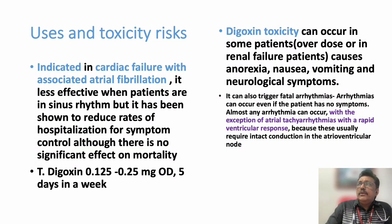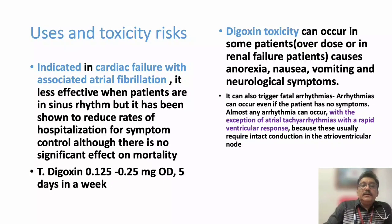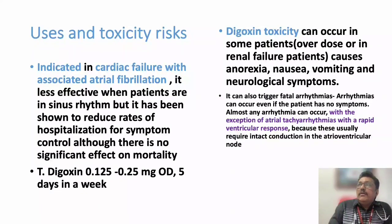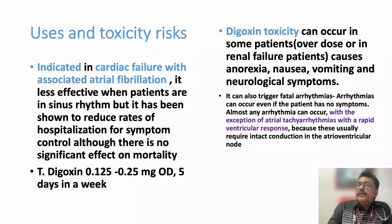Any patient on Digoxin admitted to the emergency room with severe vomiting and nausea — you have to think about Digoxin-induced arrhythmias. It can produce most arrhythmias except atrial tachycardia with rapid ventricular rate, because atrial tachycardia with rapid ventricular rate is not common with Digoxin. All other arrhythmias are common. So Digoxin is both an anti-arrhythmic drug and a pro-arrhythmic drug.